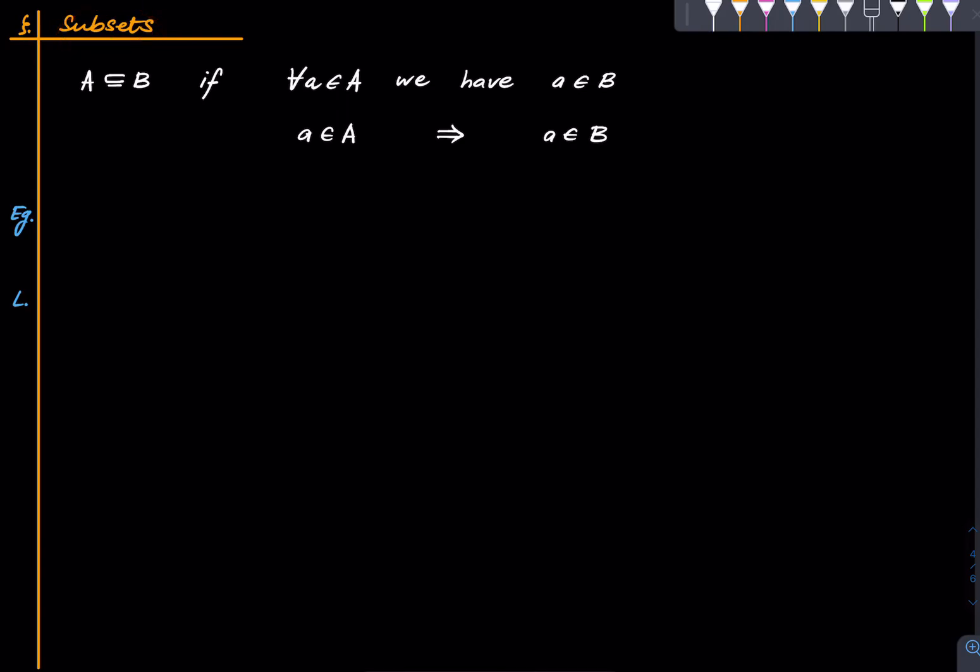Subsets—it's a very natural concept. Suppose I have a set B. Then we say that A is a subset of B, written A ⊆ B, if for all a in A, we have a in B. Meaning every element of A is an element of B. That's what a subset is. If everything that is there in A is also there in B, B can potentially have more things, but it certainly has everything that is there in A. Another way to write this is: a ∈ A implies a ∈ B.